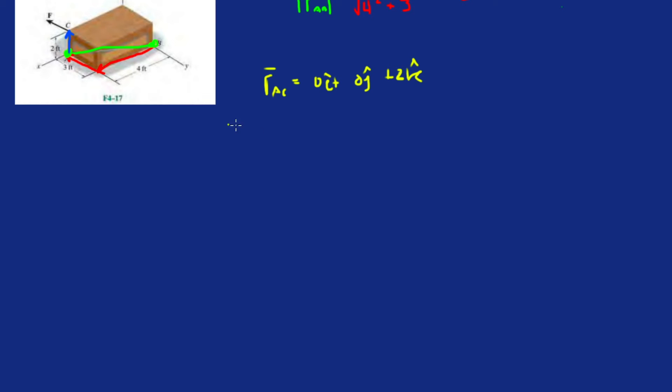Let's write the notation we've been using. The moment about AB is equal to the unit vector of AB dotted with the moment about a point on that line. Let's do it about A.